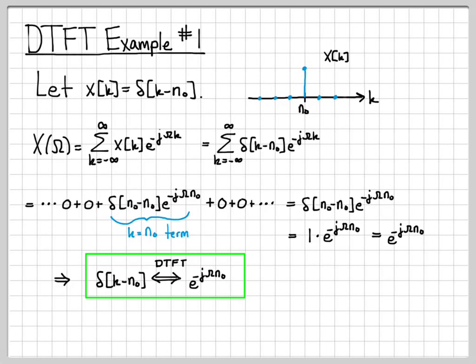So that concludes this example. In the next example, we'll do a slightly more complicated one where the summation doesn't collapse as much. But this was a good one to start with. We got to introduce the definition of the DTFT and do a very simple computation to compute the DTFT of this signal.